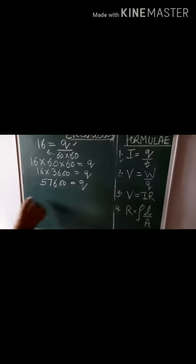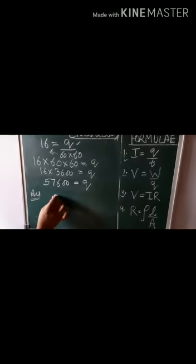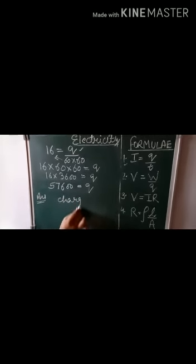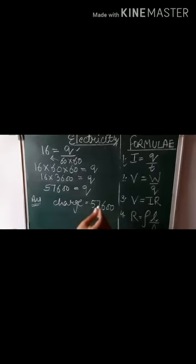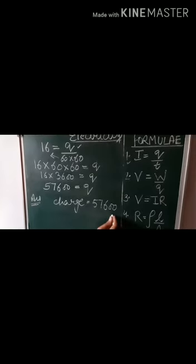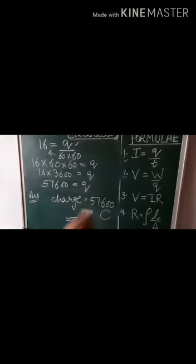And this will be your Q. Now at last for the answer, you all have to write the value: charge is equal to 57,600. Now tell me, what is the SI unit of charge? It is coulomb. So your numerical is complete. This is the answer.